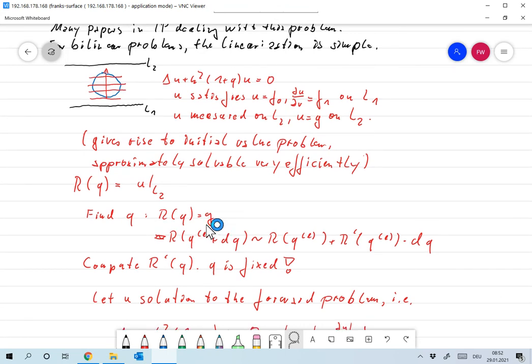And following our idea I write R of Q, I approximate Q by a series of Qs. I write Q plus one as Q plus DQ, and I would like to have this equals G. So I approximate this operator R by a linearization, so this is something like R of Q plus R prime of Q times DQ.